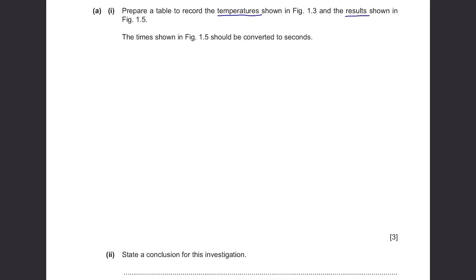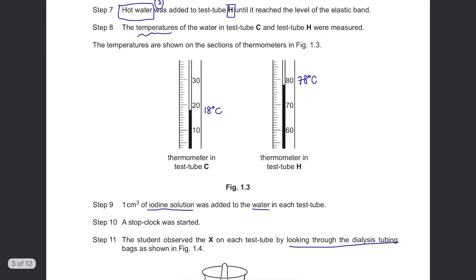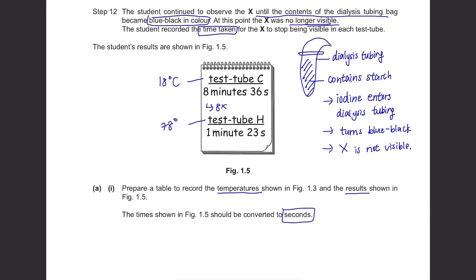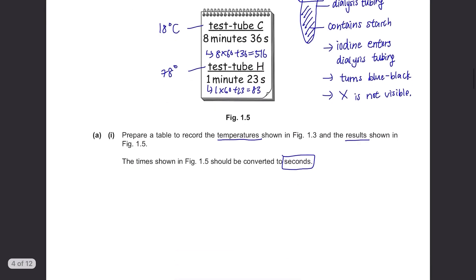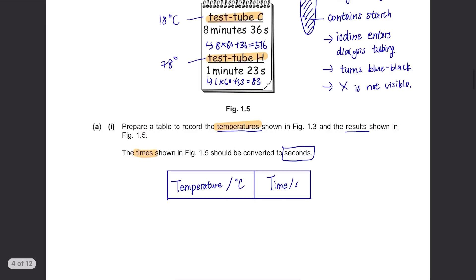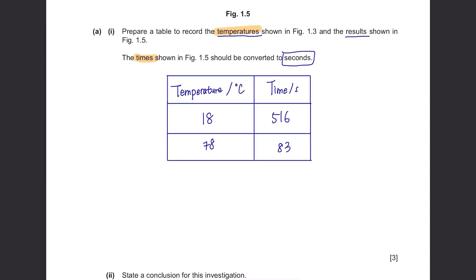Part A: Prepare a table to record the temperatures shown in Figure 1.3 and the results shown in Figure 1.5. The times shown in Figure 1.5 should be converted to seconds. The temperatures in Figure 1.3 were 18 and 78 degrees Celsius and if we change these to seconds by multiplying the minutes with 60, they are 516 and 83 seconds. If we put this in a table, we'll first need a header row which states the temperature and time with appropriate units. Then since we have two test tubes here, there should be two more rows. Fill up the table and you're done.